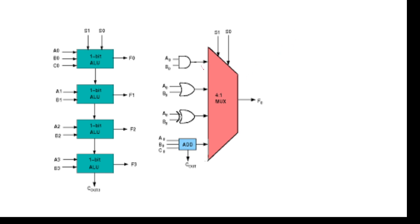For logical operations with two inputs A and B, we have operations like A AND B, A plus B, and so on. For arithmetic operations, that is the addition of two numbers: A plus B, A minus B, A divided by B — it gives both arithmetic and logical operations.